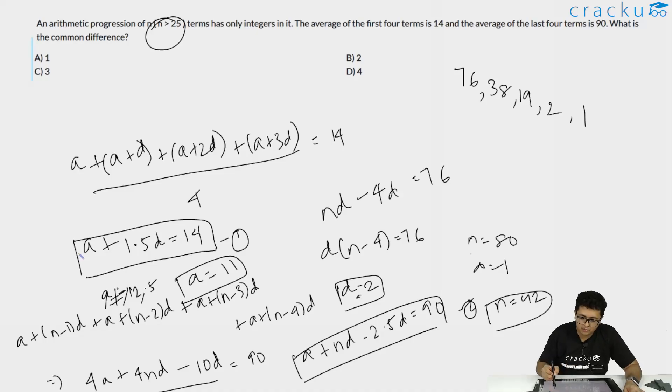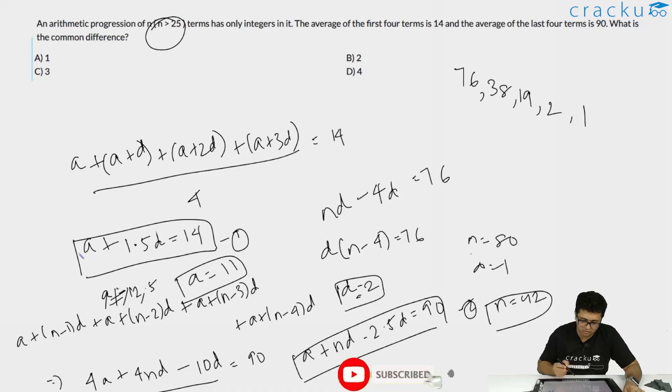Therefore, the common difference d = 2. The answer is b.